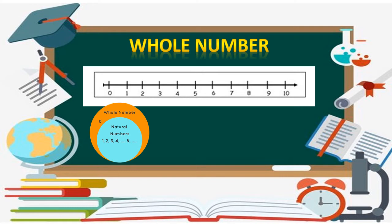We can say that the collection of zero and counting numbers make the whole number. Here you see the number line starting from zero and the other numbers one, two, three, four, five, six, seven, eight, nine and ten are placed at equal distance. So the combination of zero and the counting numbers or natural numbers are what make whole numbers.